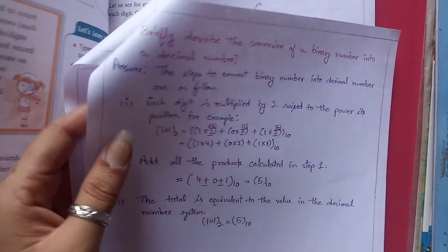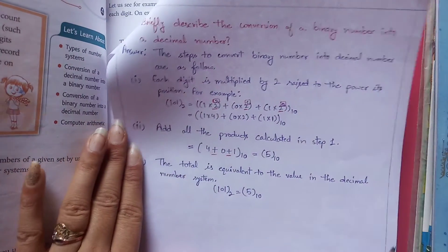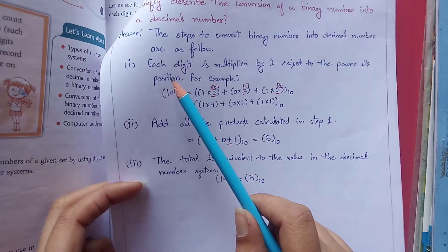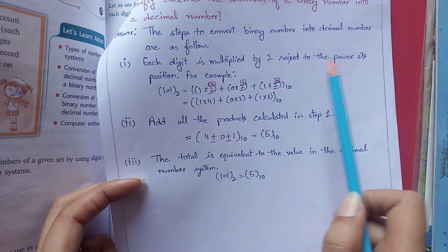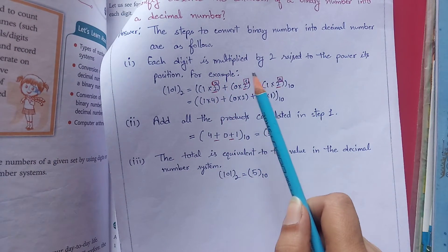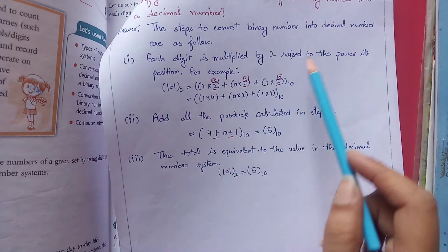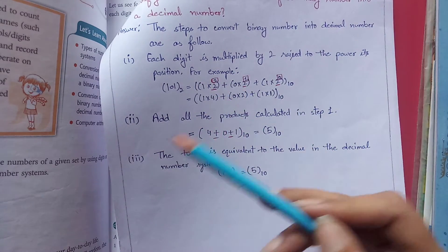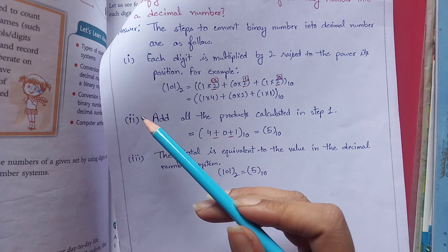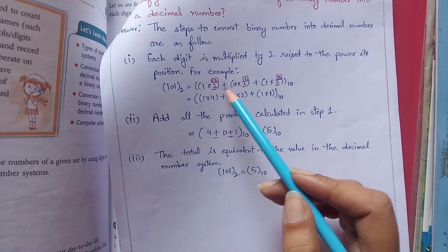Fifth question is briefly describe the conversion of binary number into decimal. Now we have to convert binary number into decimal. We will take the binary number that we obtained. First step is each digit is multiplied by 2 raised to the power of its position. Positional value system is used in this. The position according to its power, rightmost is 0, then increases when we go left. So 101 is the number. First we multiply each number and put the plus sign.